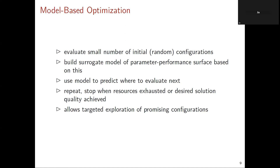We use the model to decide where to evaluate next, then repeat the whole process. We stop when we've exhausted resources or reached sufficient solution quality. In contrast to random sampling, this allows for a very targeted exploration-exploitation trade-off, focusing on things that work well while also searching through the space. Conceptually this is very similar to what you would do as a human — try a bunch of things, find what works, focus on that neighborhood, satisfy yourself there's nothing better, then go somewhere else. Except the machine doesn't get confused after ten evaluations, and it doesn't get frustrated if you let it run overnight or for a week.